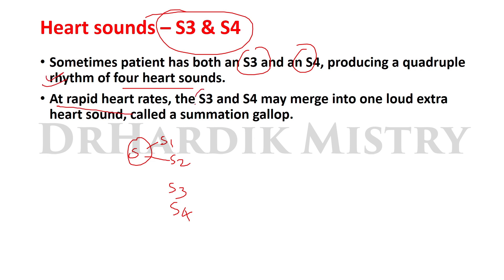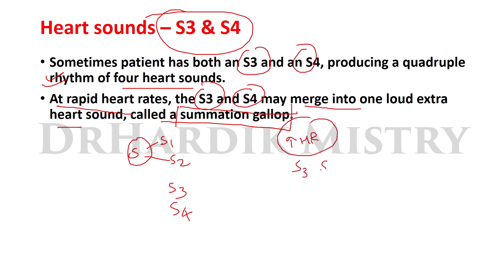At rapid heart rates, S3 and S4 may merge into one loud extra heart sound called a summation gallop. When the heart rate increases, S3 and S4 merge together producing a single louder sound. I hope you now understand the abnormalities of heart sounds. If you liked this presentation, please share it with your friends, group, batch, and colleagues. Thank you.